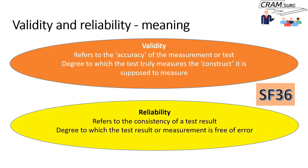Reliability, on the other hand, refers to the consistency of the result of a test. It relates to the degree to which the test result or measurement is free of error. If you use the SF-36 quality of life tool and ask the same patient to complete it three or four times within a day, you'd expect the score to be the same if the test is reliable.